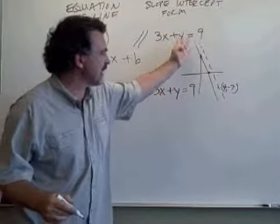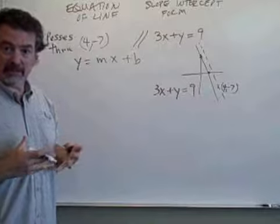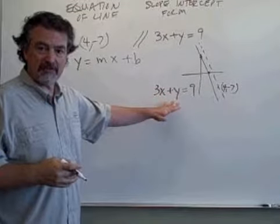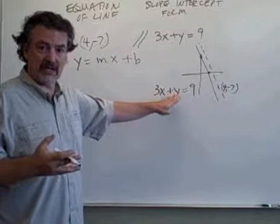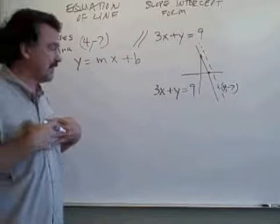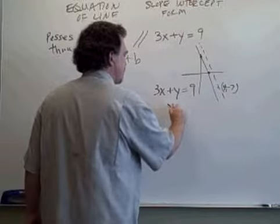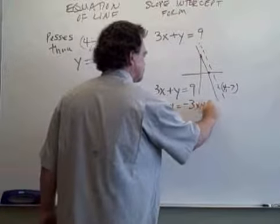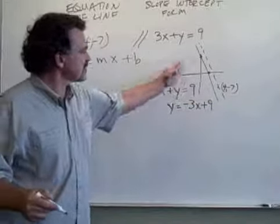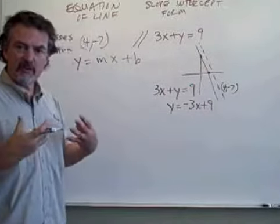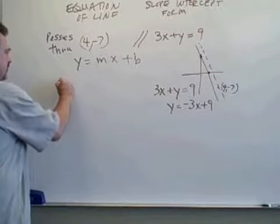I'll take the equation of this line, to which our line is parallel, put it in slope-intercept form. I'll know the slope of this line, which will tell me the slope of our line. I'll subtract 3x from both sides. The slope of this line is negative 3, so the slope of our line has to be negative 3.